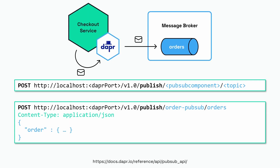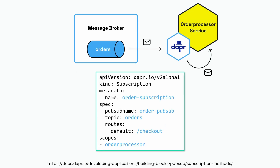Now let's look at the publisher side — the checkout service that will actually publish a message. When we use the HTTP API, we use a publish endpoint followed by the name of the pubsub component and ending with the name of the topic. In our example, the component name is "order-pubsub" and the topic name is "orders", so we are posting a JSON payload to this endpoint.